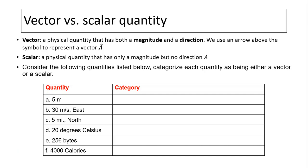Now consider the following quantities listed below. Categorize each as either a vector or scalar. A quantity with no direction is a scalar quantity; a quantity with a direction is a vector quantity. For example, (a) is a scalar quantity because it has no direction. The second one has a direction, so that is a vector quantity. A vector quantity has two parts: magnitude and direction.